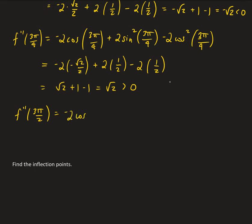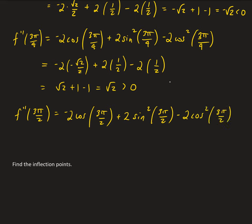Evaluating the second derivative at 3π/2: cosine 3π/2 is 0, sine squared of 3π/2 equals 1 (since sine 3π/2 is negative 1), and cosine squared 3π/2 is 0. We get 0 plus 2 minus 0 equals 2, which is greater than 0 — so the function is concave up on (π, 5π/3).